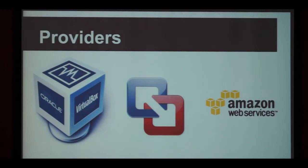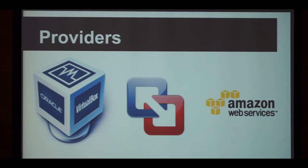Next up are the providers. VirtualBox is the reference — Vagrant started with VirtualBox as the sole provider and then made providers extensible. You now have VirtualBox as the standard and VMware as a more advanced provider. You can buy the VMware plugin from HashiCorp, the company behind Vagrant. You even have EC2, so you can from the command line boot up EC2 instances, provision them, and SSH into them. You can also write your own provider — it's Ruby and fairly easy.